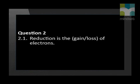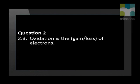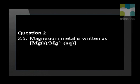Let's test some more definitions. Is reduction the gain or loss of electrons? Does reduction take place at the anode or the cathode? Is oxidation the gain or loss of electrons? Does oxidation occur at the anode or cathode? Magnesium metal is written as Mg(s) or as Mg²⁺(aq).